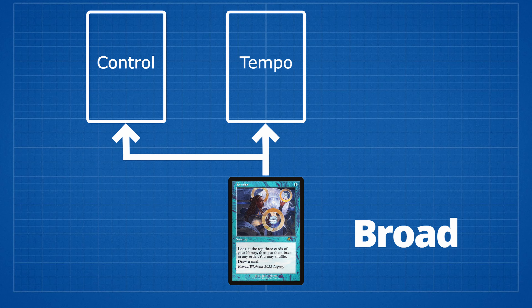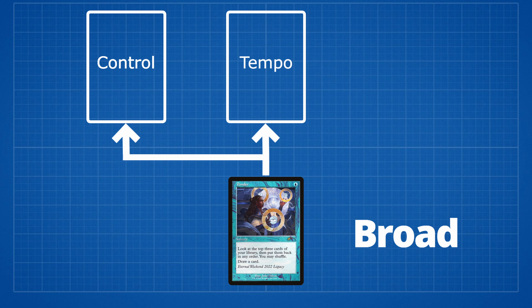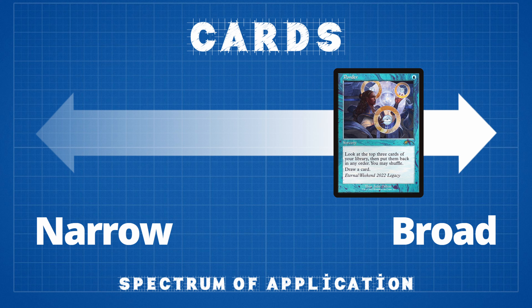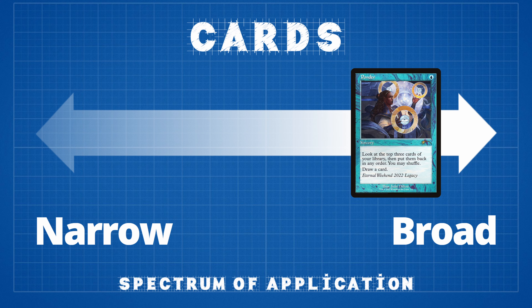Ponder fits into numerous archetypes. First, because of its inexpensive casting cost — a single blue mana — and its valuable card draw ability, Ponder will basically go into any blue deck, whether you're playing pure control or more tempo-oriented strategies. Additionally, because Ponder is a non-creature spell and an inexpensive cantrip, it fits very well in prowess-style decks running cards like Monastery Swiftspear or Third Path Iconoclast. Because of these characteristics, Ponder is a card with broad applicability.